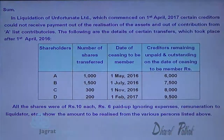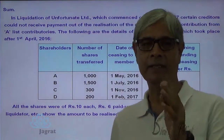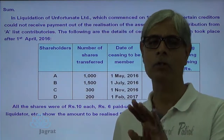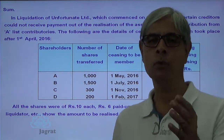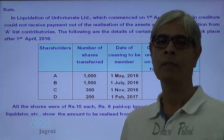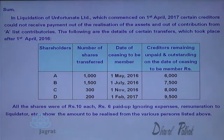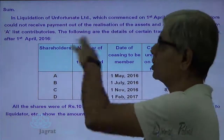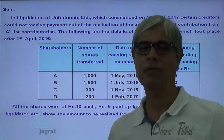In liquidation of an Unfortunate Limited, which commenced on 1st of April 2017, certain creditors could not receive payment out of the realization of assets and out of the contribution from List A contributories. The realized value of assets and contribution made by A contributories is not sufficient. So the liquidator is required to ask for the unpaid capital to be paid by List B contributories. The following are the details of certain transfers which took place after 1st of April 2016, and the date of liquidation is 1st of April 2017.